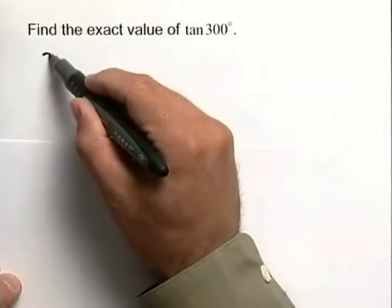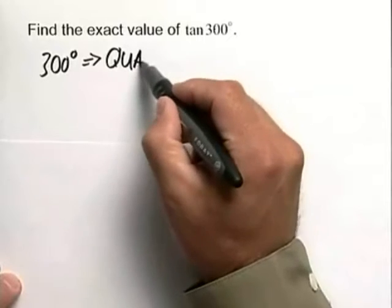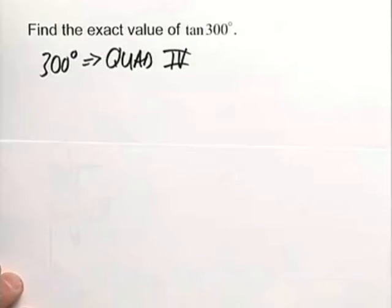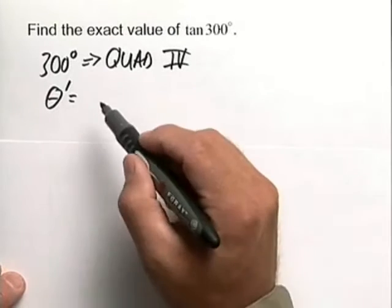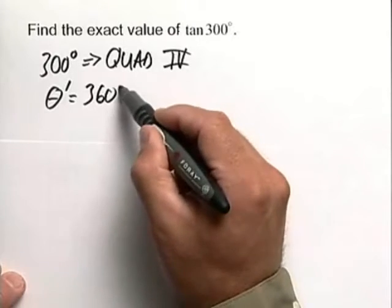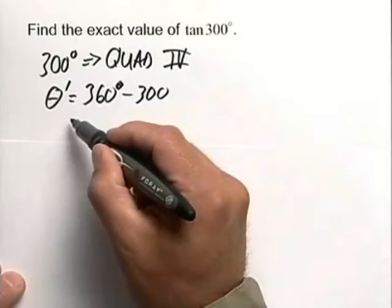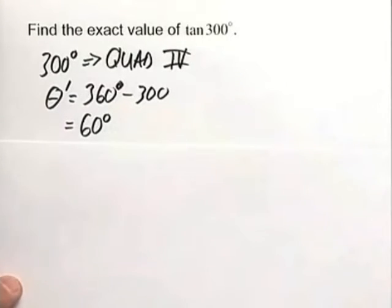First thing you want to recognize here is that 300 degrees is in quadrant 4. And because that's in quadrant 4, we need to do some work here to find our reference angle. Theta prime in quadrant 4 is equal to 360 minus our angle 300 in this case. So we can say that our reference angle theta prime is equal to 60 degrees.